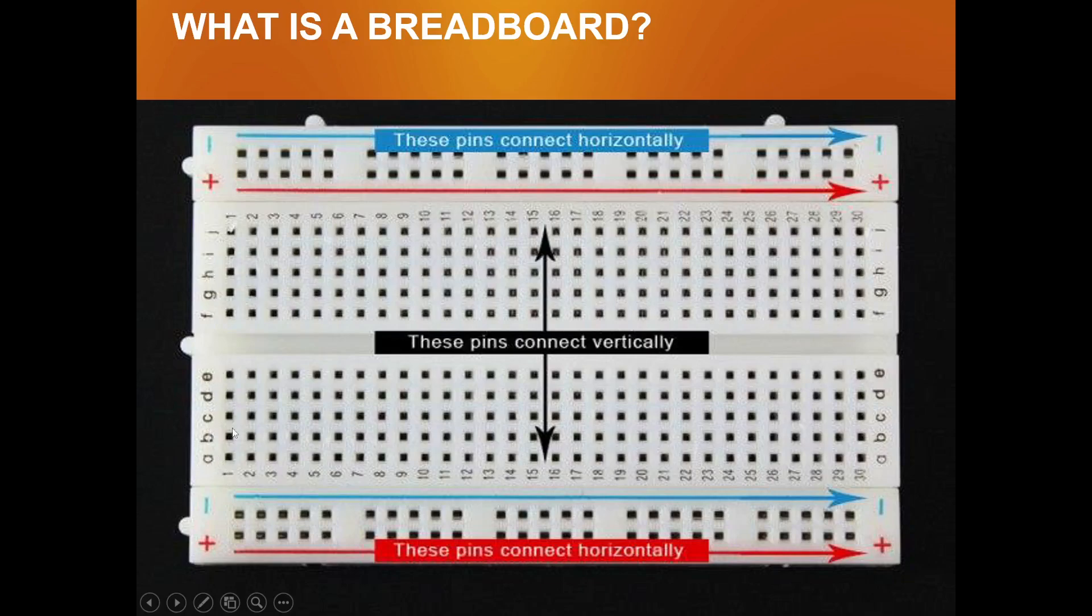These number one a, b, c, d, e pins have same connection. Number two, these pins have same connection. For three a, b, c, d, e these have same connection. That means if you connect anything at three a or three b or three c or three d or three e, all will be same connection.